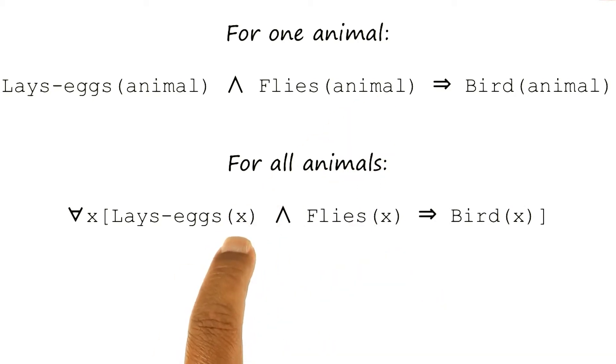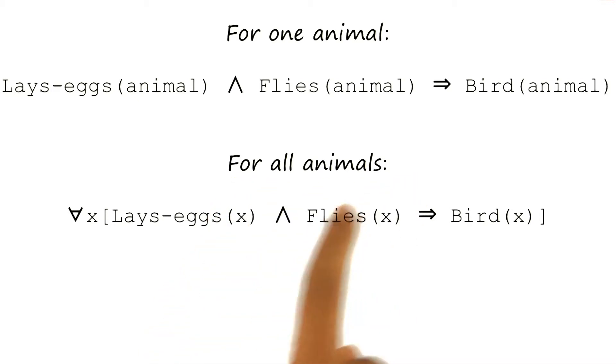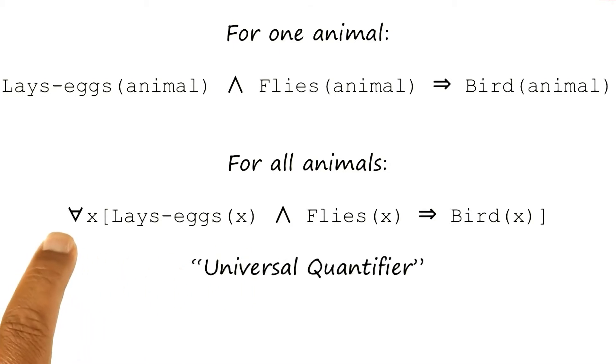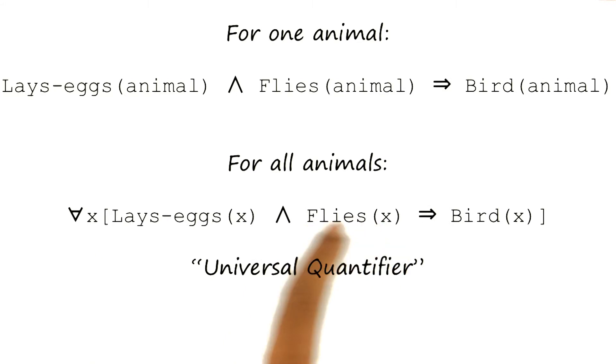Now I have a variable here, but I must also specify the range of the variable. And what I really want to say here is for all animals. Therefore, I'll introduce a new quantifier over the variable x. This quantifier is called universal quantifier. It is denoted with this symbol. This says now for all x, if x lays eggs and x flies, it implies that x is a bird.